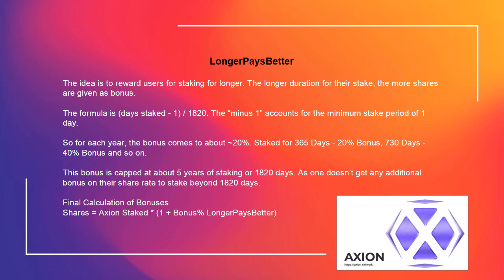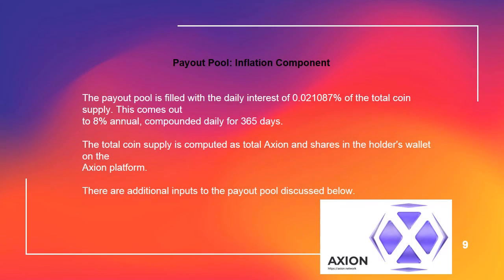Final calculation of bonuses: Shares equals Axion staked multiplied by (1 plus bonus percent from longer pays better). Payout pool — inflation component. The payout pool is filled with the daily interest of 0.021087% of the total coin supply. This comes out to 8% annual, compounded daily for 365 days. The total coin supply is computed as total Axion and shares in the holder's wallet on their Axion platform. There are additional inputs to the payout pool discussed below.